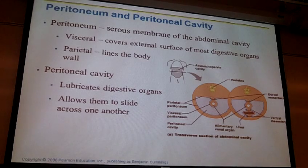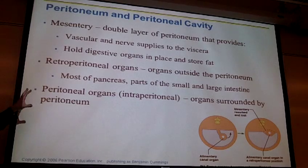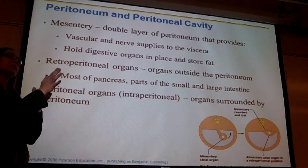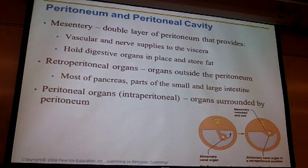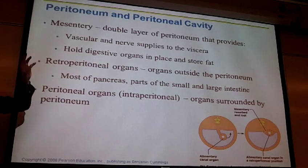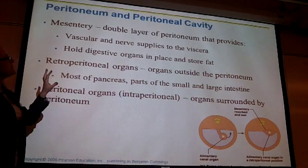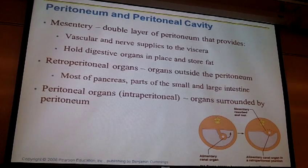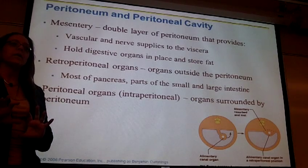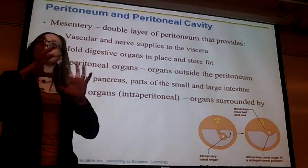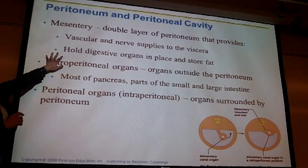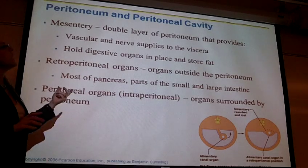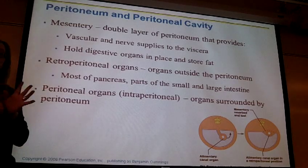These digestive organs also have mesentery — basically a double layer of that peritoneum. Mesentery helps connect all the various organs together, holding them in a particular area. Also within the mesentery you find lots of blood vessels routing to the different organs, as well as nerves routing to these different organs.